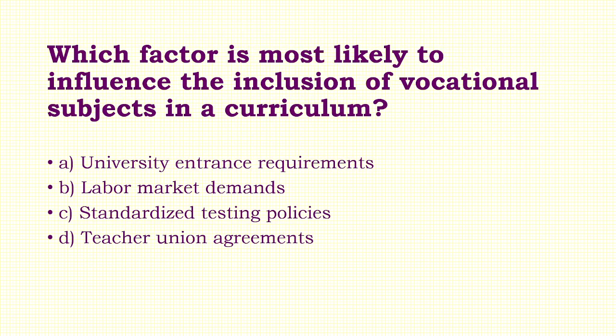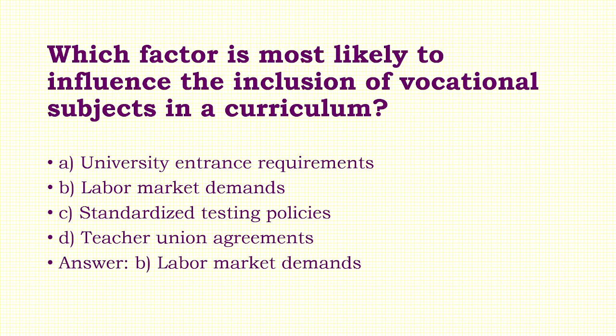Question 23: Which factor is most likely to influence the inclusion of vocational subjects in a curriculum? Options: A) University Entrance Requirements, B) Labor Market Demands, C) Standardized Testing Policies, D) Teacher Union Agreements. Answer: Option B — Labor Market Demands.